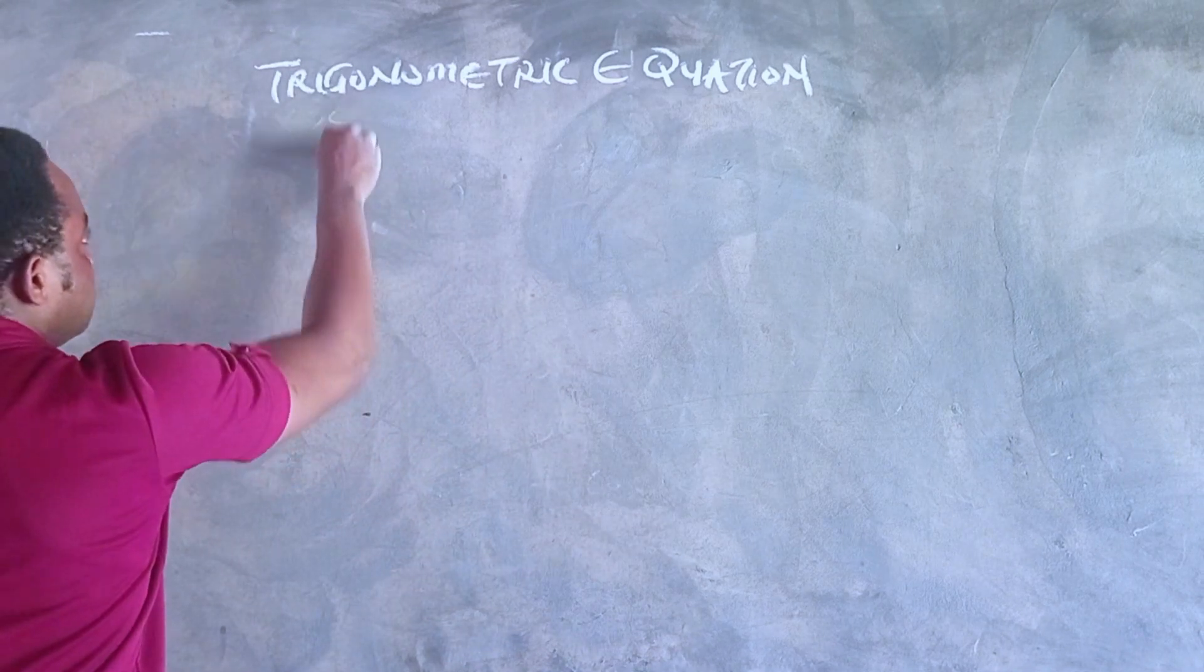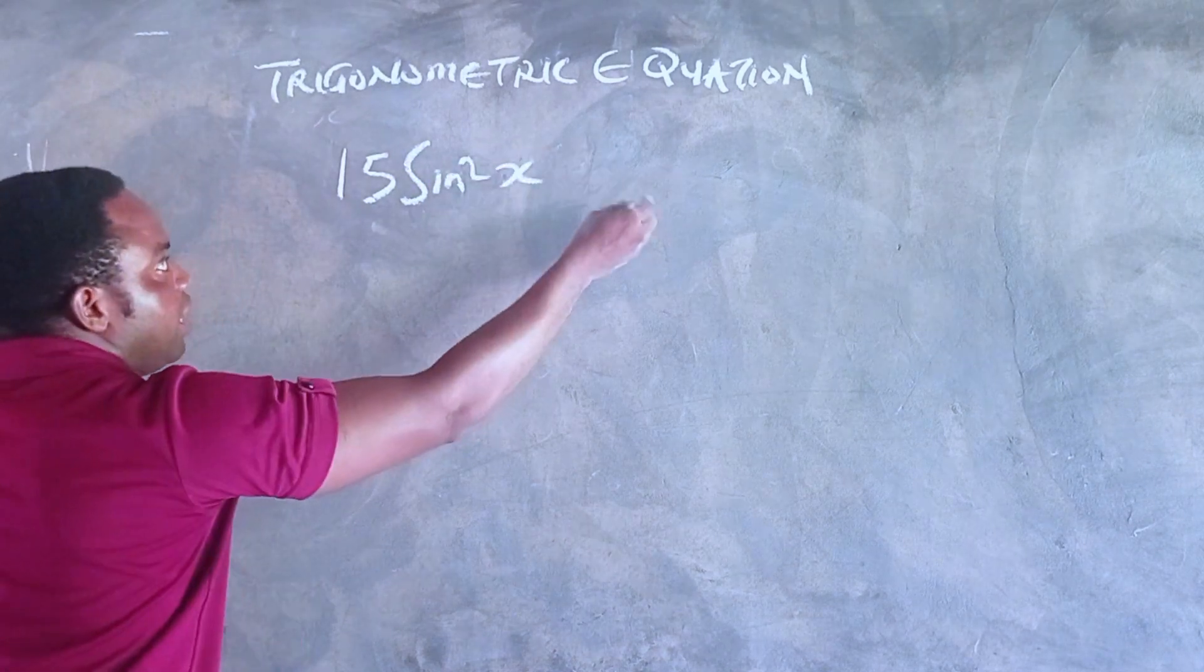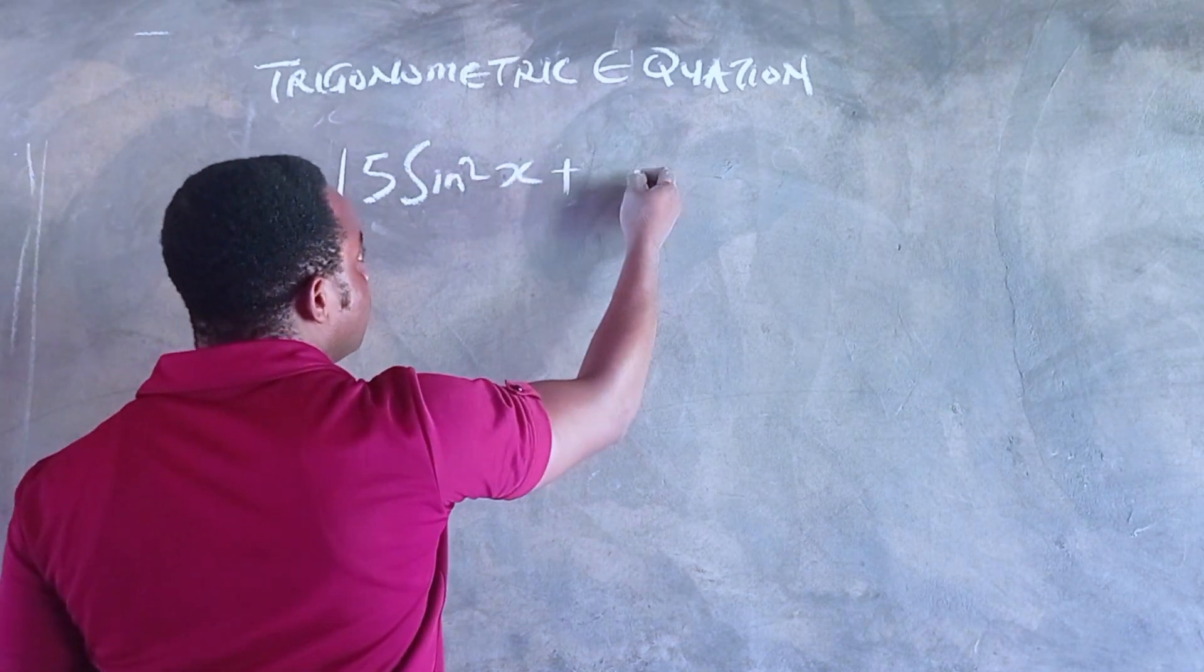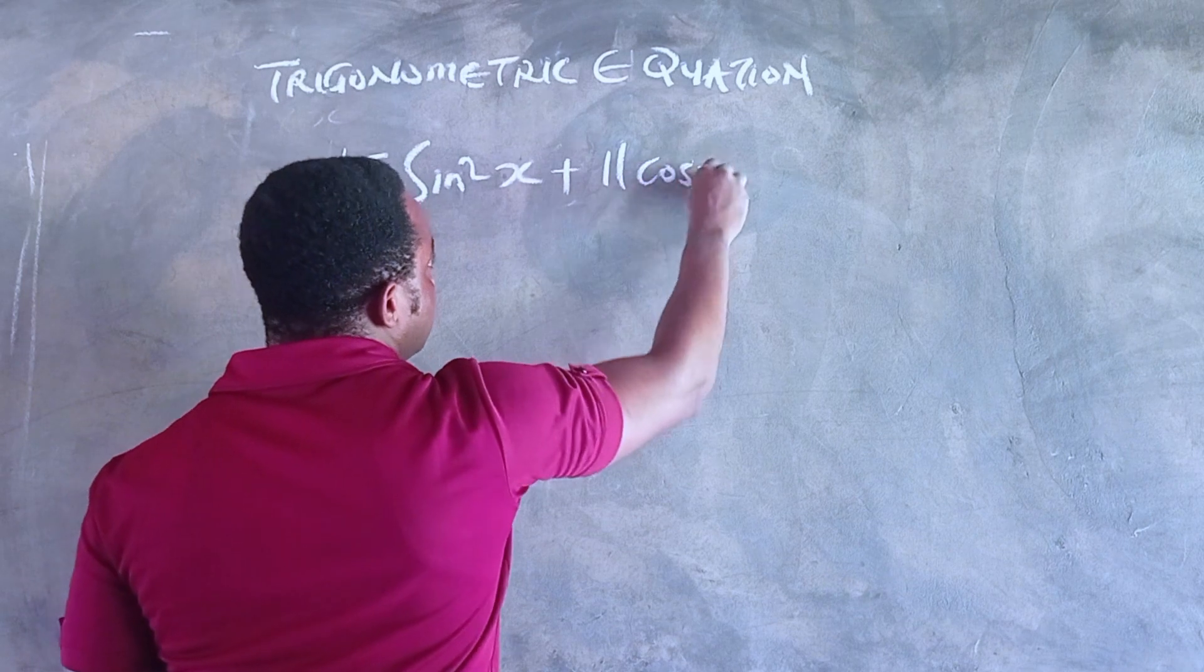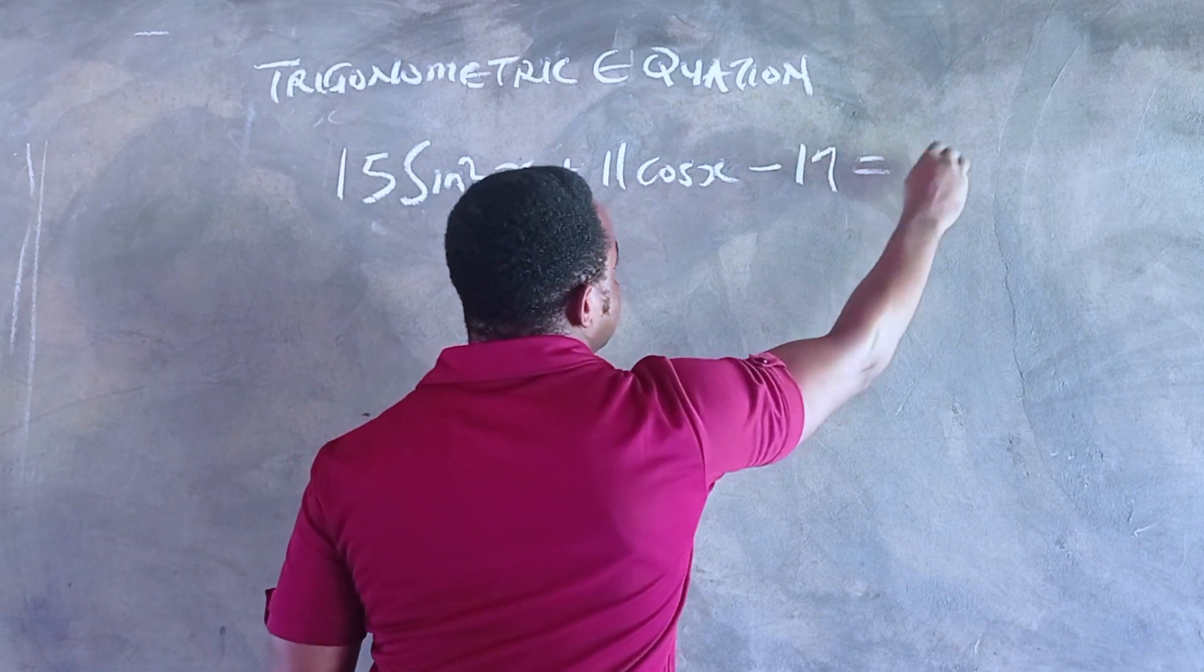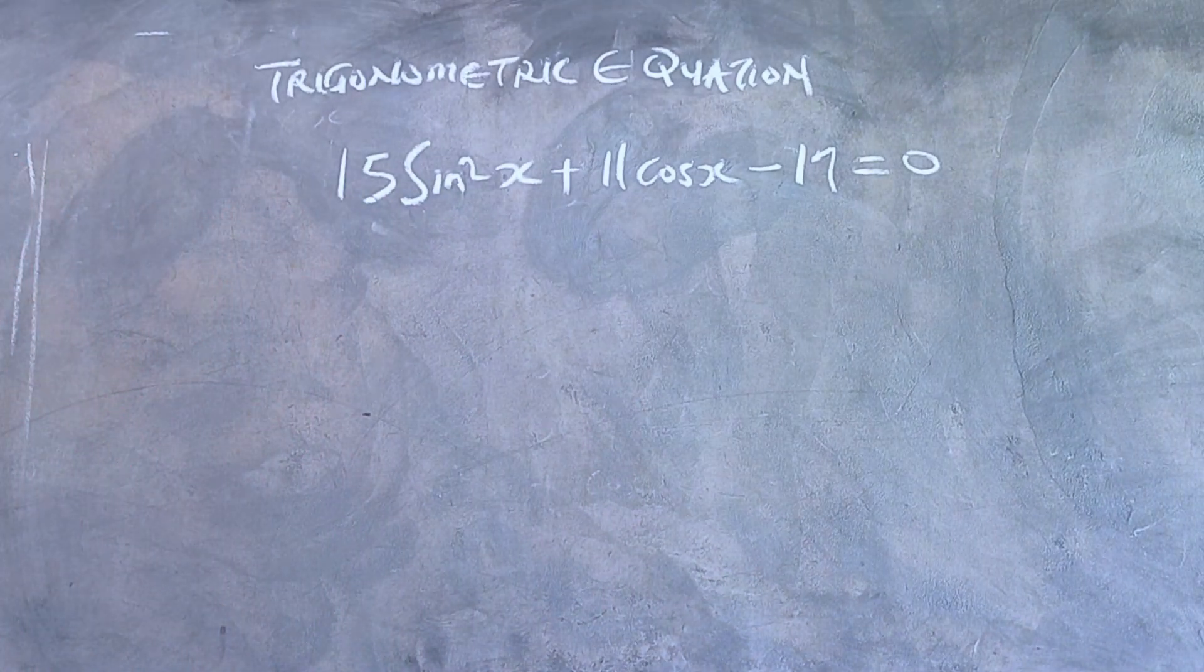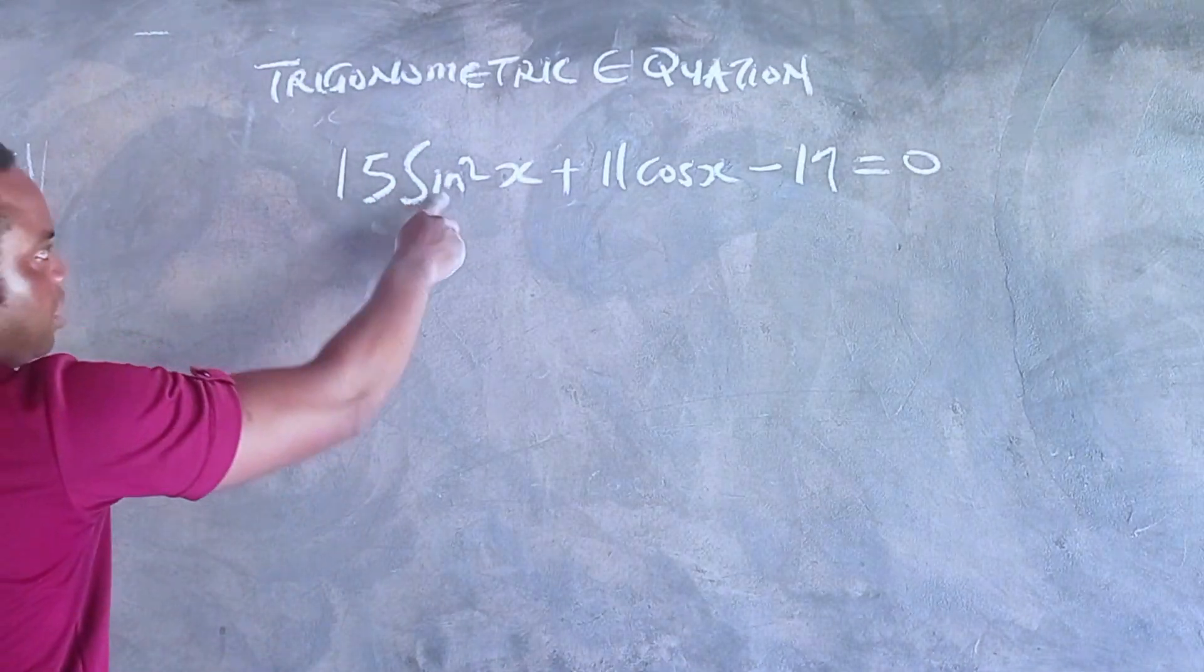I found this equation in one of the Mathematical Association of Nigeria Math Olympiad problems: 15sin²x + 11cosx - 17 = 0. Without wasting time, let's go right into it.